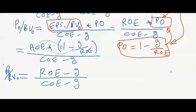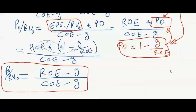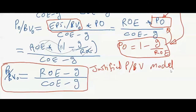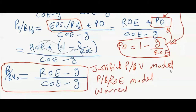So the justified price-to-book value multiple equals (ROE minus g) divided by (cost of equity minus g). We usually value banks using book value multiples. This formula is based on three main fundamentals: growth rate, return on equity, and cost of equity. Another name for this model is the ROE model, and it is sometimes called the warranted equity valuation, because it represents the valuation for the bank's equity warranted by its fundamentals.